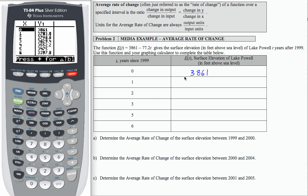So this was in 1999. That's year zero. The surface elevation was 3,861 feet. The next year, in 2000, it was 3,783.8 feet. So I'm just going to keep going down here and writing in all the information.